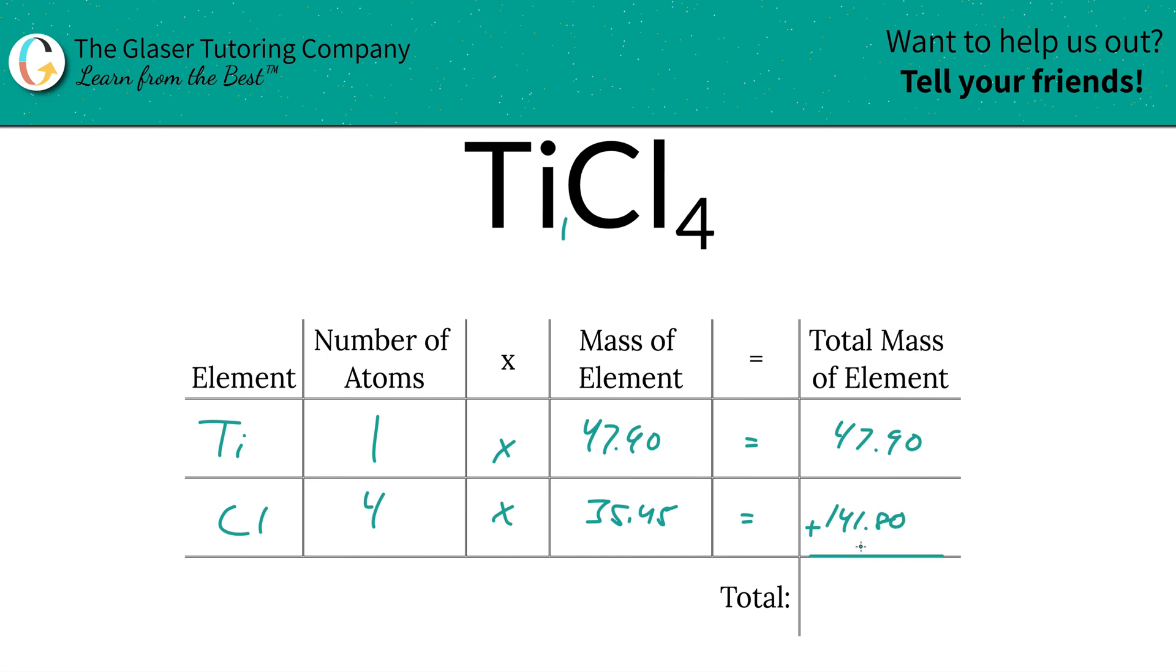And then to find the total mass of the entire compound, we're simply just going to add this column up. So that's 189.70. That was the first step of the process to find the total mass of the compound. Now that we know the total mass, I'm going to add a column to this table to help find the percent.